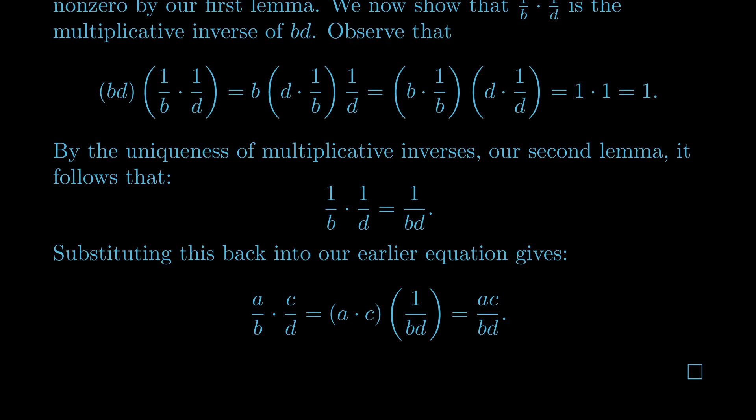These five field axioms that we've been using turn out to be quite powerful in proving all sorts of typical manipulations of real numbers. It is a useful exercise to do this for a few other statements. For example, using only the field axioms, can you prove that adding fractions works as expected? That (a/b) + (c/d) is always (ad + bc)/bd, provided b and d are non-zero.